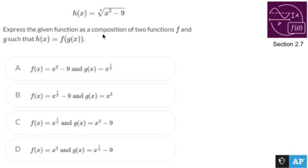Express the given function as a composition of two functions f and g such that h of x is f of g of x. All right, so this is what I see. I have a function living within a function.